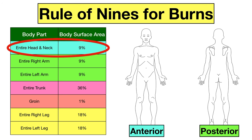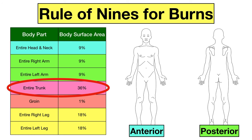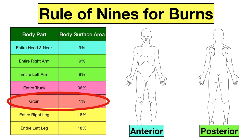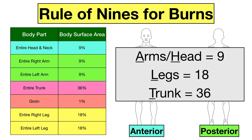The entire head and neck make up 9% of the total body surface area. The entire right arm and left arm each make up 9% of the total body surface area. The entire trunk has a body surface area of 36%. The groin has a body surface area of 1%, and the entire right leg and left leg each make up 18% of the total body surface area — and this totals 100%.